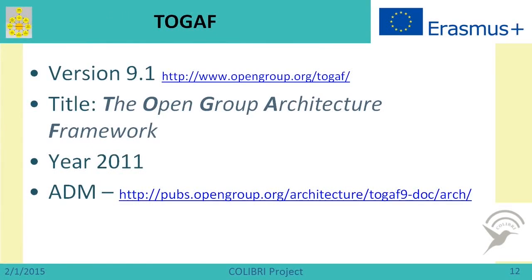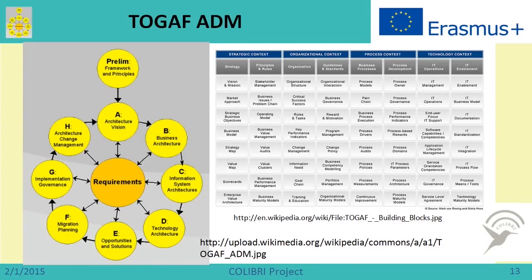Another framework is TOGAF — The Open Group Architecture Framework. The latest release is from 2011, and it has its own architecture development method for which certification is available. The upper-level structure shows the overall architecture, while the yellow diagram on the left depicts the ADM, describing how enterprise architecture is created. Starting from preliminary work and architecture vision, it proceeds through business architecture, information systems architecture, technology architecture, operations and solutions, and so on. When changes are needed, a new version of the enterprise architecture can be initiated.